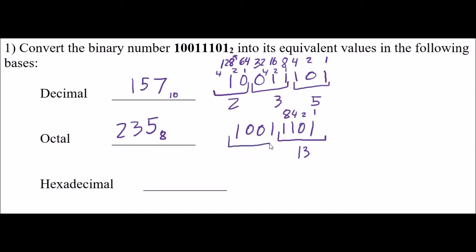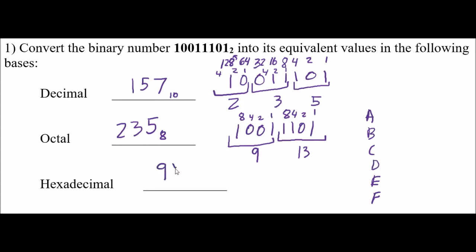My next group of 4: 1s place, 2s place, 4s place, 8s place — I have 8 plus 1, so this is a 9. Now, you cannot write a 13 as a hexadecimal digit. A 13 has to be expressed as a letter. In hexadecimal: 10 is A, B is 11, C is 12, D is 13, E is 14, F is 15. So 13 is a D. I need to write 9D — that is my base 16 number.